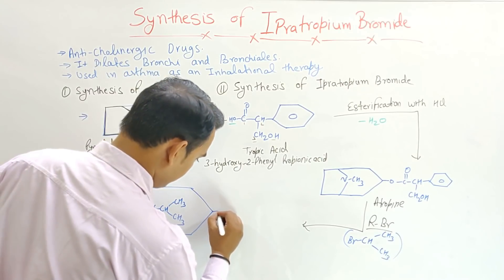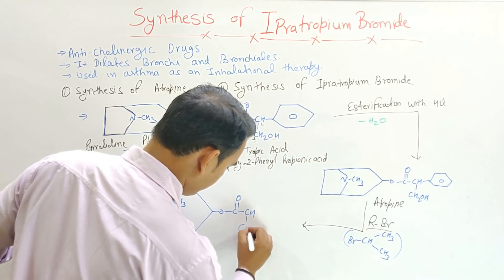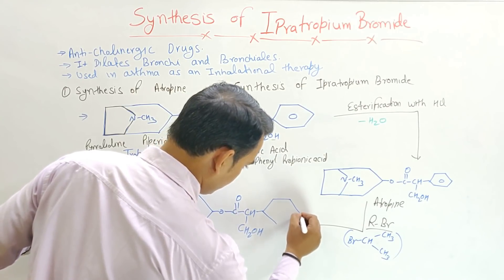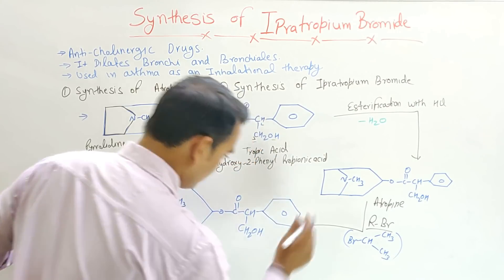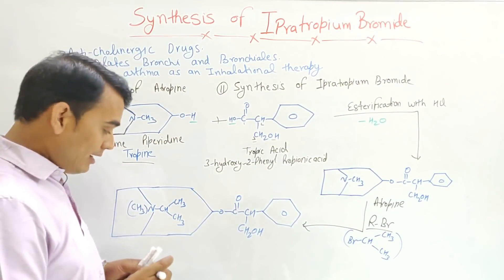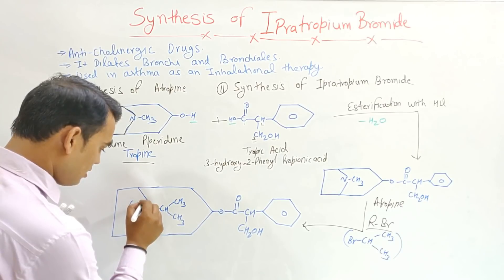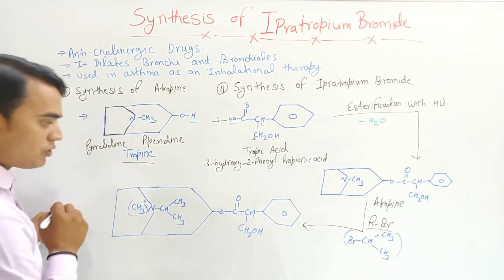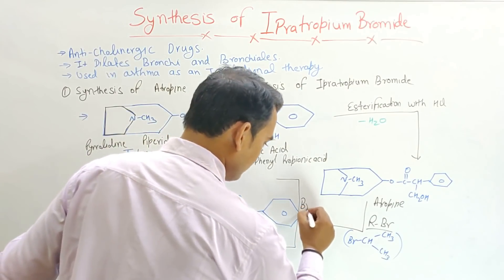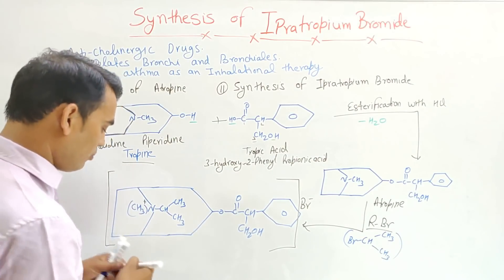The structure here is same as in the atropine with N-CH3, CH2-OH, and the phenyl ring. Now we have named it ipratropium bromide because this nitrogen has a positive charge. So overall with this we have bromide. This is the final structure of ipratropium bromide.